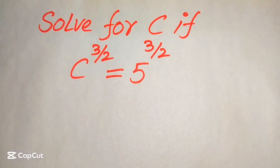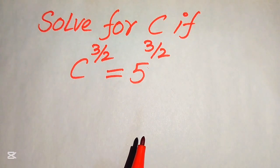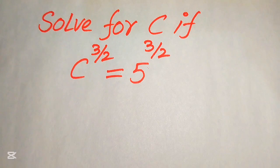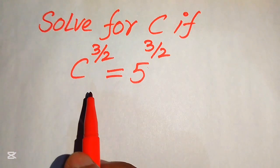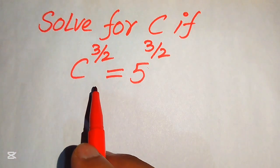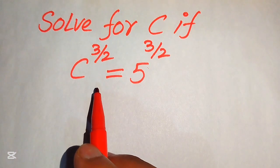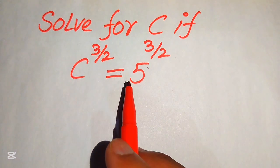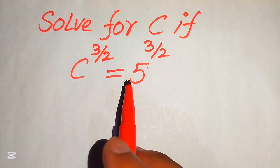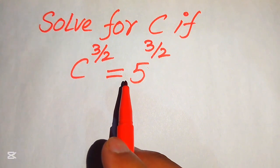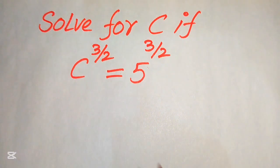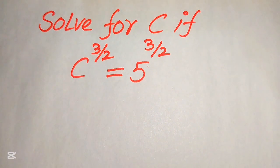Hello everyone. Today I want to show you how to solve this problem for the values of c, if we have c to the power of 3 over 2 equals to 5 to the power of 3 over 2, and we solve this problem for all the values of c.